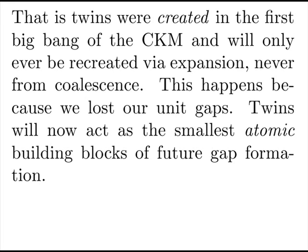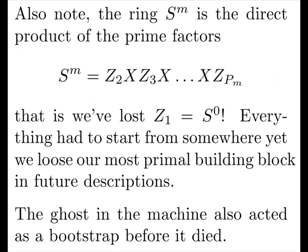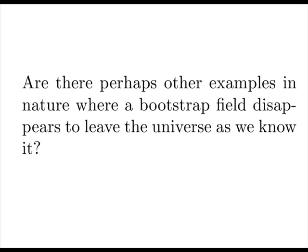That its twins were created in the first Big Bang of the composite killing machine, and will only ever be recreated via expansion, never from coalescence. This happens because we lost our unit gaps. Twins will now act as the smallest atomic building blocks of future gap formation. Also note, the ring SM is the direct product of its prime factors, which is very trivial in our case. And we've lost our primitive member. Everything had to start from somewhere, yet we lose this primal building block. The ghost in the machine also acted as a bootstrap before it died. We can't use it for multiplication, but it generated the more complex gap structures that we see. Are there perhaps other examples in nature where a bootstrap field disappears and leaves the universe as we know it?